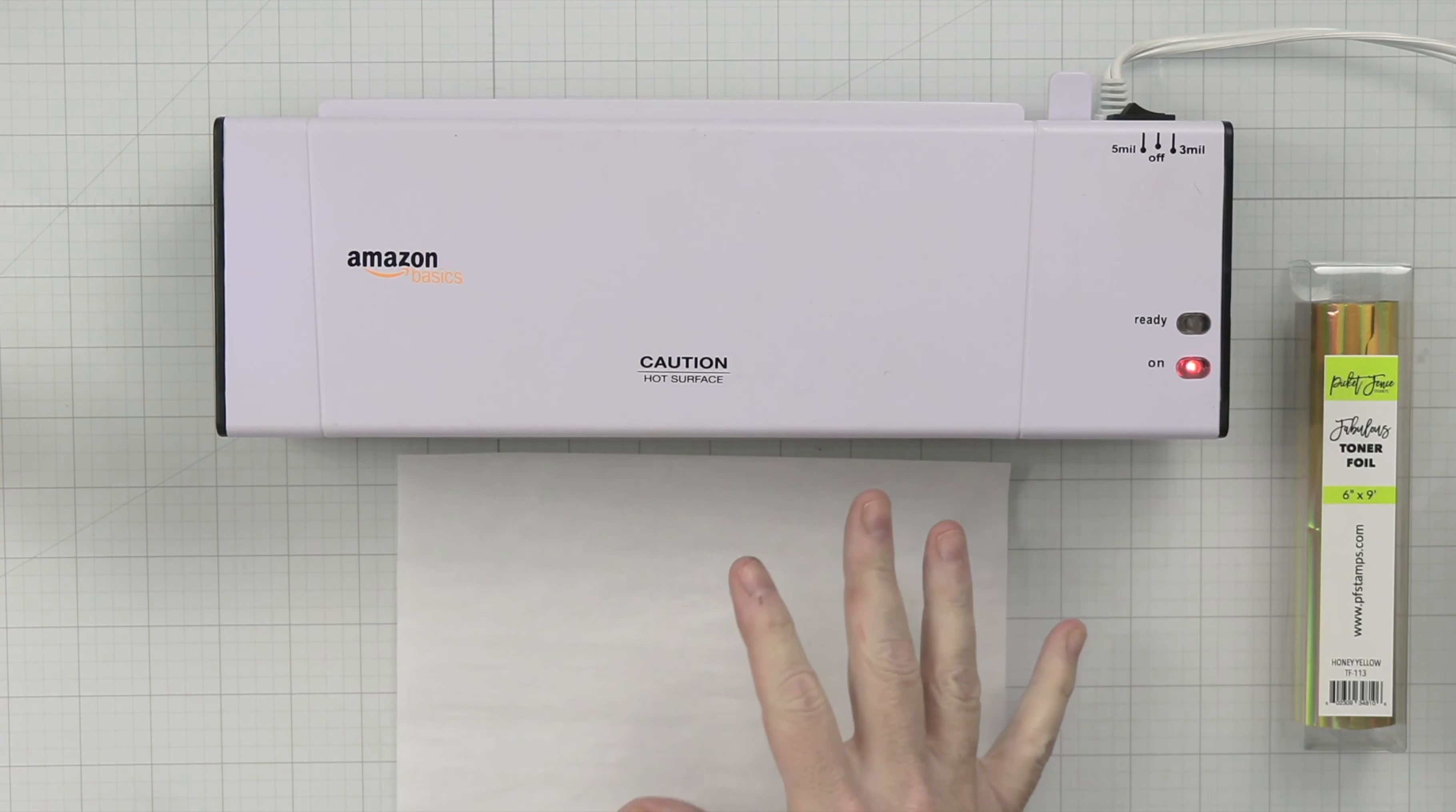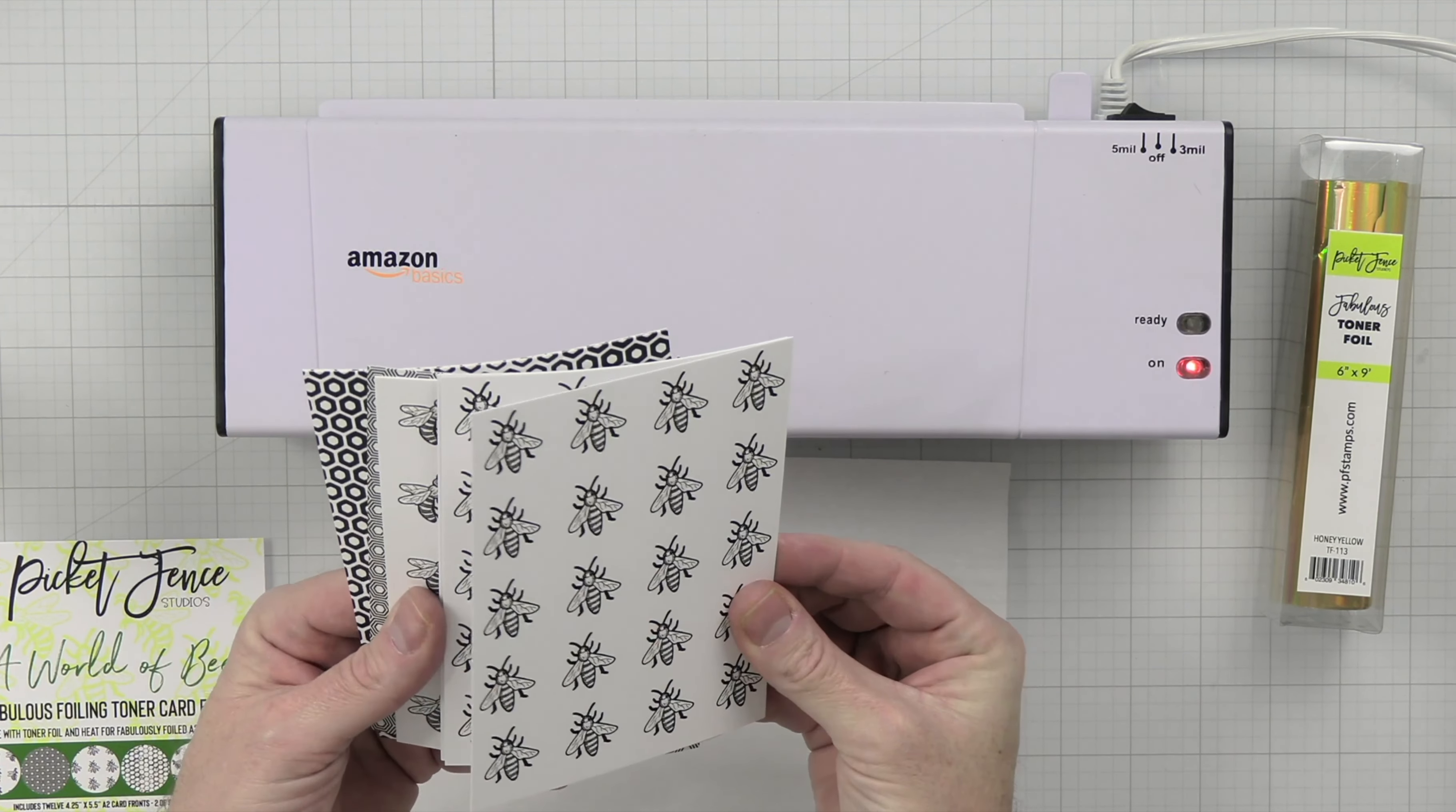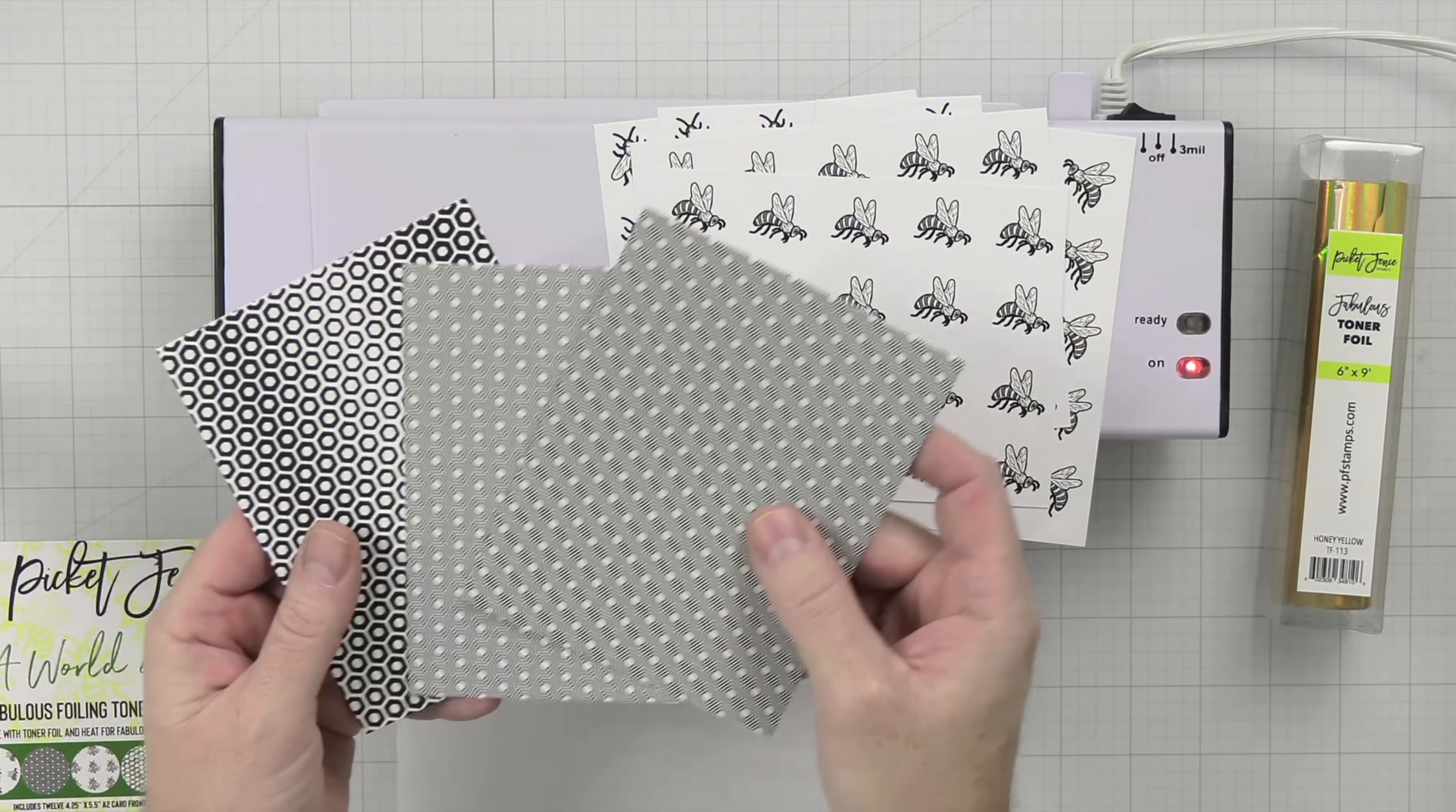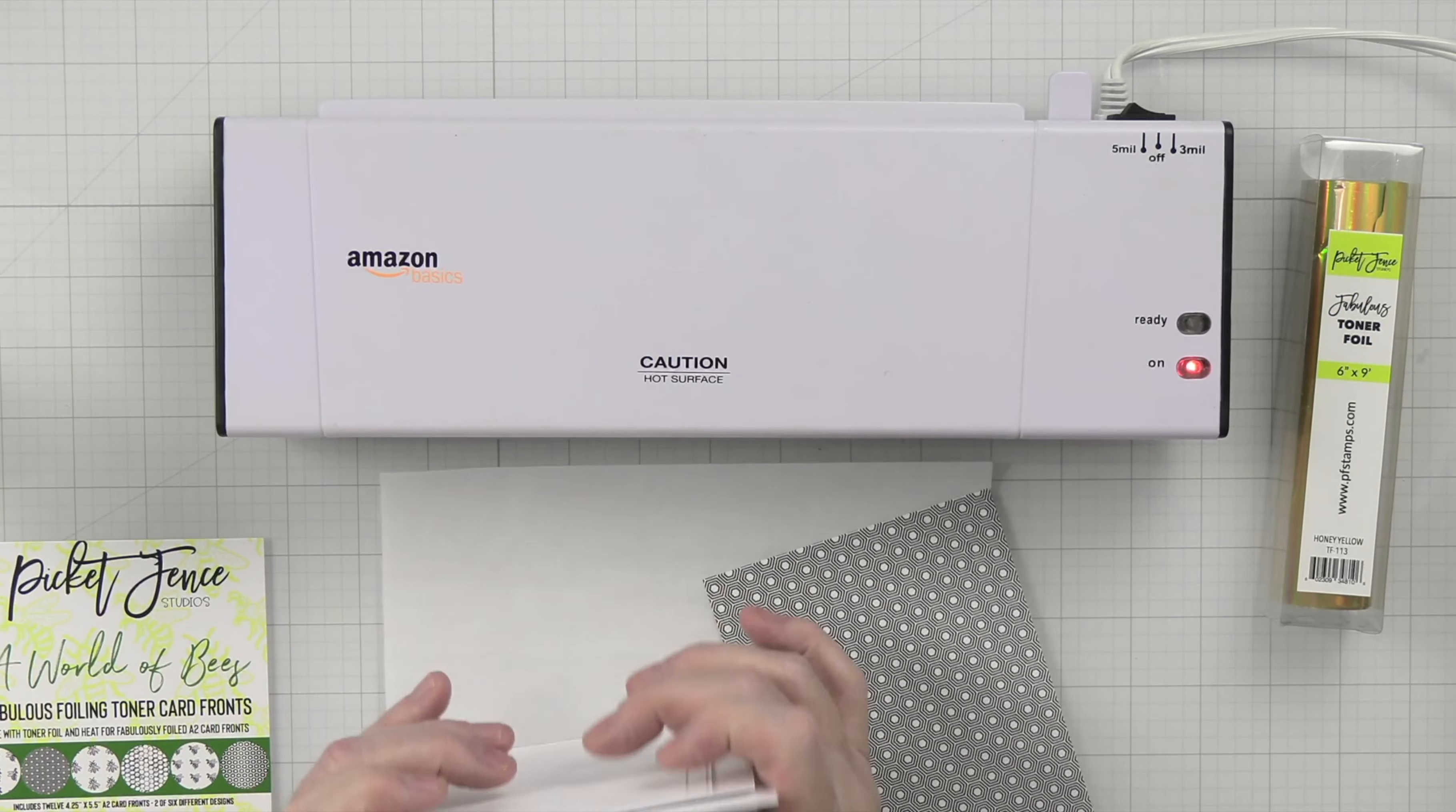Now what we're going to do is we're going to do some foiling here. We're going to be using the honey yellow foiling toner foil. We're also going to be using the fabulous foiling toner cards. I just want to show you the patterns that are here. We have these bees, two of each one. There's some going this way and then this way. We have like this dizzy beehive and then this kind of honeycomb. I think I'm going to use this today. So we'll go ahead and get all this put away.